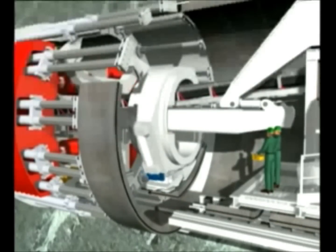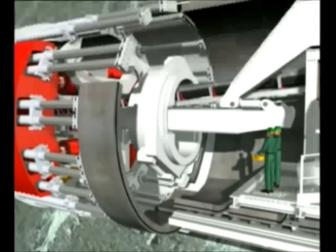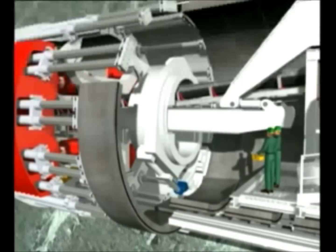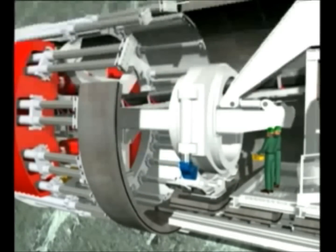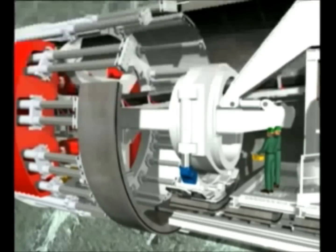Placement of the segments is done by the erector. The erector is controlled by a portable manual control and with direct visual contact. The segments are lifted off the segment feeder by a vacuum suction plate.